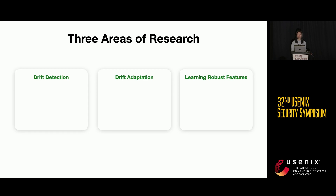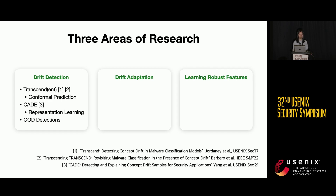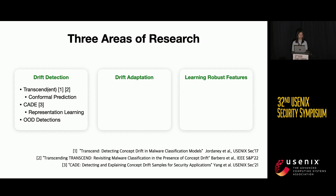There have been roughly three areas of research that try to tackle the concept drift problem: drift detection, drift adaptation, and learning robust features. In drift detection, two notable lines of work are Transcendent and CADE. Transcendent builds on conformal prediction theory to find new samples most dissimilar to training samples and detects these as drifted. CADE uses contrastive learning to learn a robust embedding space, then uses distance-based measures to detect drifted samples.